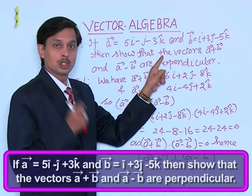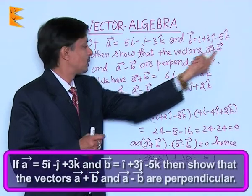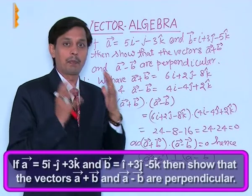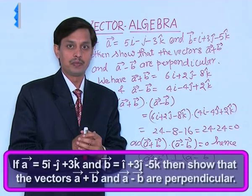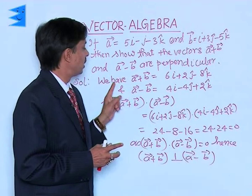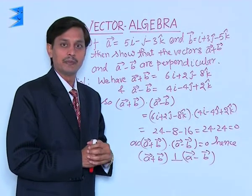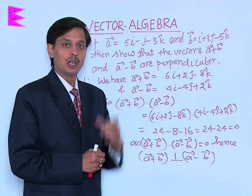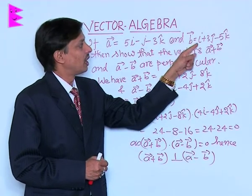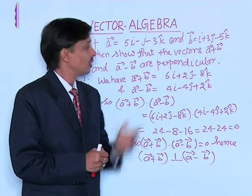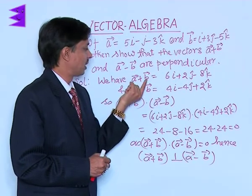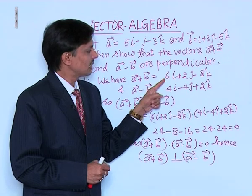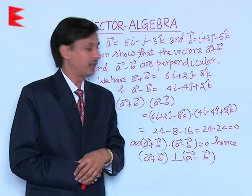We need to prove that vector A plus B and vector A minus B are perpendicular to each other. First, we calculate A plus B. Vector A is 5i minus j minus 3k, and vector B is i plus 3j minus 5k. Adding these two gives us A plus B equals 6i plus 2j minus 8k.